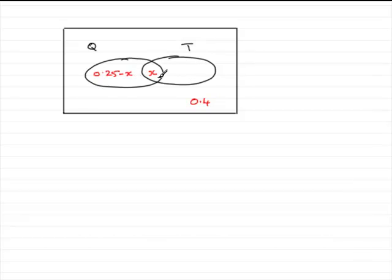We're also told that 45% read the tabloid newspaper, so that means that this region here must be 0.45 minus X. This is the region that only represents students who just read the tabloid newspaper.